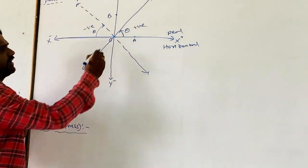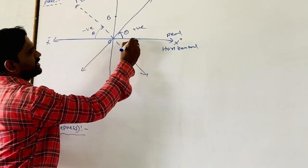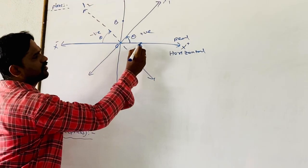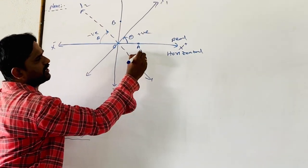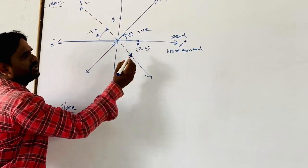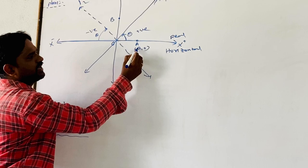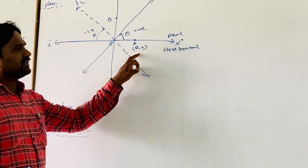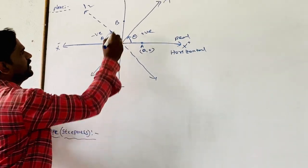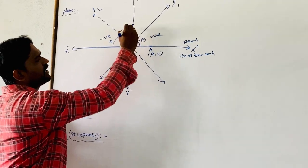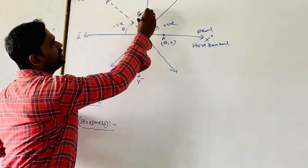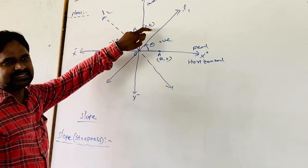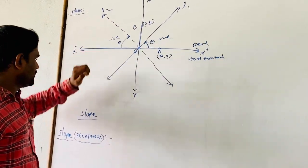For any point A on the x-axis, we take its coordinates as (a, 0). A is known as the x-intercept. Point B has coordinates (0, b), where b is known as the y-intercept.